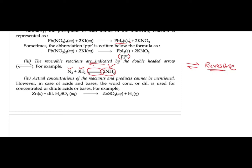You can also write 'dil' for dilute and 'conc' for concentrated. Concentrated means less water, more chemical. Dilute means more water, less chemical. So you can also indicate the concentration of your chemical with this extra information.